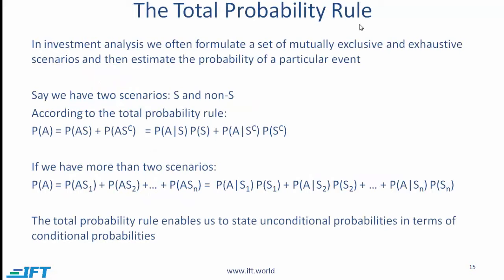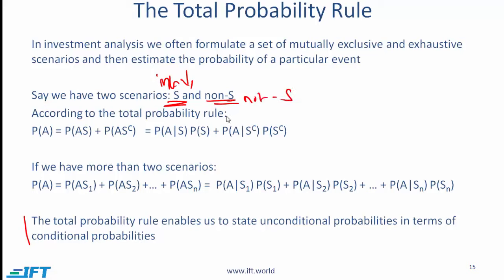Now let's take a look at the total probability rule. In investment analysis, we often formulate a set of mutually exclusive and exhaustive scenarios and then estimate the probability of a particular event. The total probability rule enables us to state unconditional probabilities in terms of conditional probabilities. For example, scenario S is that interest rates go down, and not-S is that interest rates do not go down — covering all other scenarios such as rates remaining stable or going up. Between S and not-S, we have two events that are mutually exclusive and exhaustive.